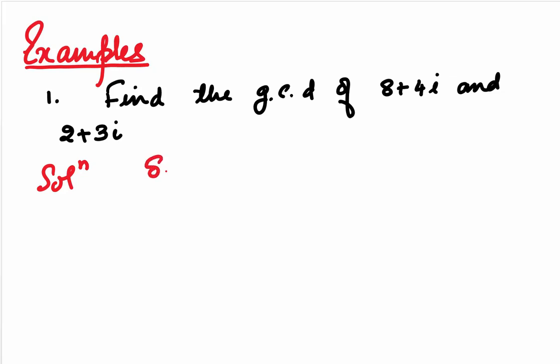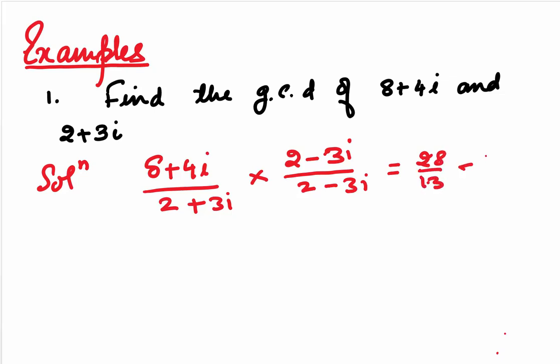For that, we will divide 8 plus 4i by 2 plus 3i. Rationalize this by multiplying and dividing by 2 minus 3i upon 2 minus 3i. This, on simplifying, gives us 28 upon 13 minus 16 by 13i.